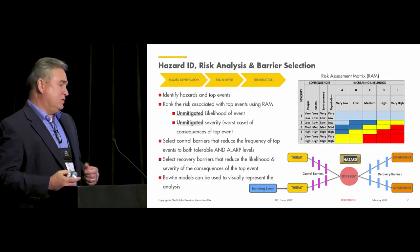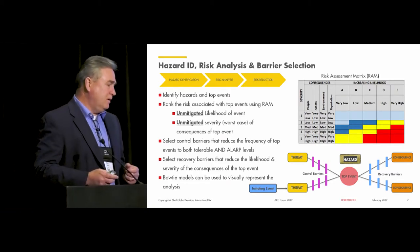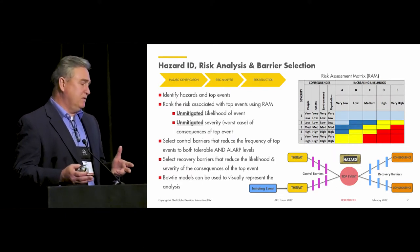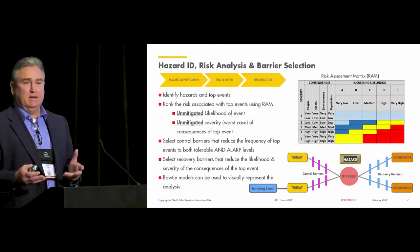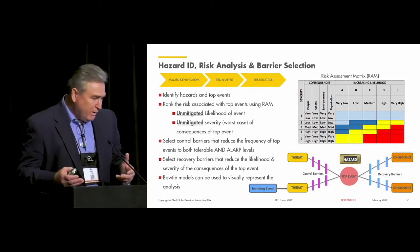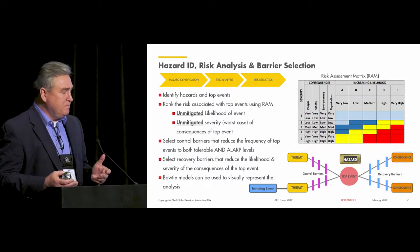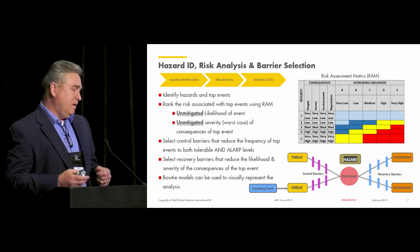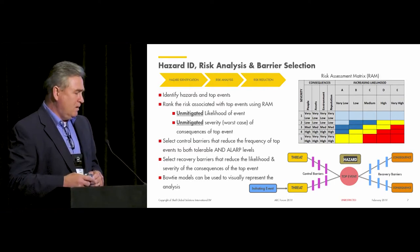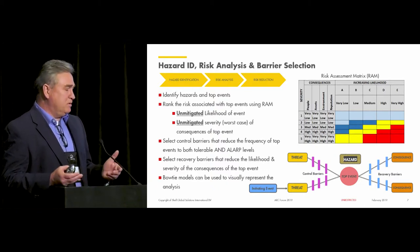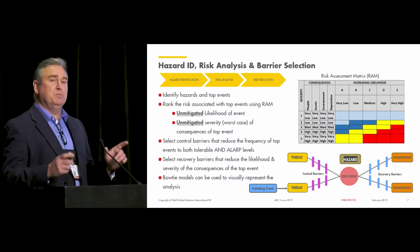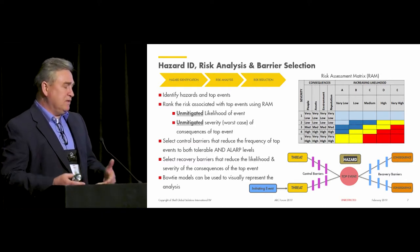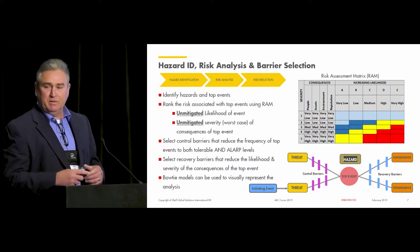This slide squashes three phases into one and introduces a couple of tools. First, identify hazards and top events. Then we use a risk assessment matrix to rank the unmitigated likelihood and unmitigated severity of consequences of the top events — using your company's risk assessment matrix, shown here in a simplified version. The next step is selecting control barriers that reduce the frequency of top events to tolerable and ALARP levels. Then selecting recovery barriers to reduce primarily the severity of top events.